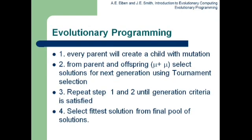This is the evolutionary programming algorithm: Step 1 — every parent creates a child through mutation. Step 2 — from the parent and offspring (mu plus mu), select solutions for the next generation using tournament selection. Repeat steps one and two until the generation criteria is satisfied. From the final pool of solutions, the fittest solution is selected as the answer to our problem. That is all about evolutionary programming. Thank you.